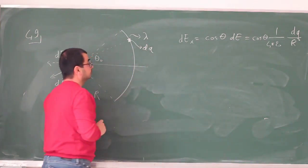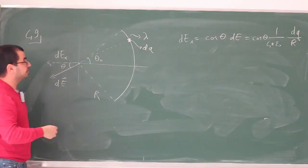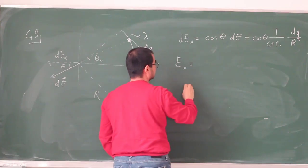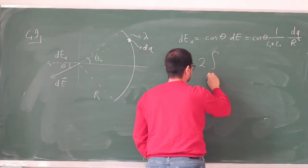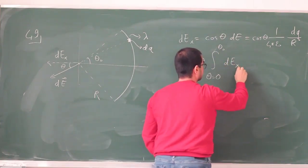And the total electric field due to all of this circular ring is simply going to be—that's the x-component of the electric field—and this is going to be θ going from 0 to θ₀ of dEₓ.